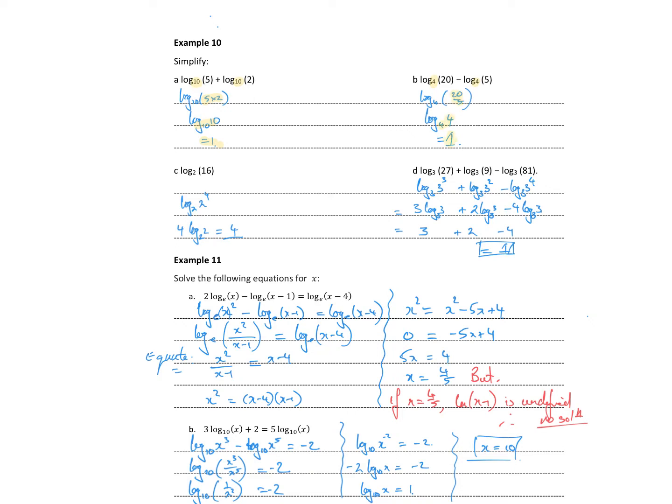That's also 1. Let's make use of some of the other laws. 16 can be expressed as 2 to the power of 4. The key is, wherever possible, see if you can convert the number into the base raised to a power. In this case the base is 2, so we write 16 as 2 to the 4, which means the 4 can come out the front, and we get log base 2 of 2, which is just 1 — so we get 4 as our answer.